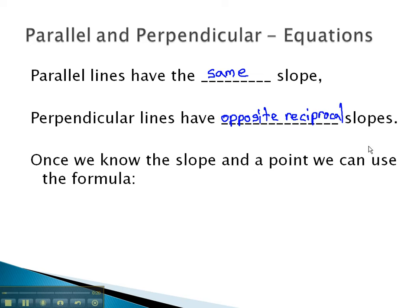Once we know the slope and a point on the line, we can use it to find the equation with the formula y minus y1 equals m times x minus x1, or the point slope equation.